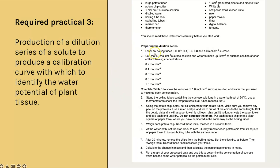First of all you need a range of different concentrated solutions — in this case sucrose, but it could be a salt solution — and that's where the dilution series comes in. You might be asked which variables you have to control, and that's why in the method they've set it at 30 degrees C. Because this is all to do with osmosis, any factors that could affect the rate of osmosis need to be controlled: the shape and size of the potato chips, which affects surface area to volume ratio, and temperature.